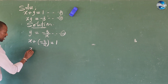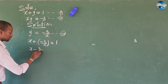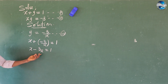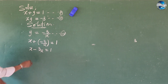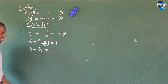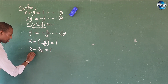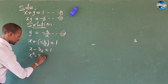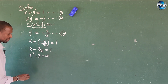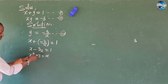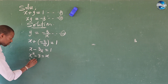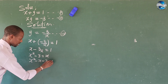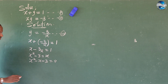So if we open up, we're going to have x minus 3 all over x equals 1. We eliminate this denominator by multiplying through by x, giving us x squared minus 3 equals x. So if we rearrange, we're going to have x squared minus x minus 3 equals 0.